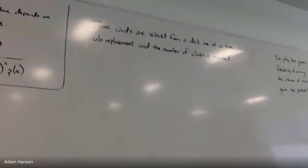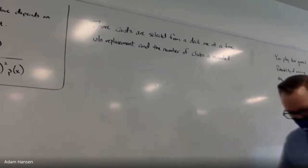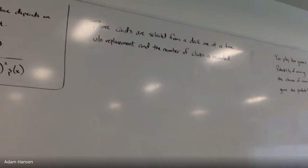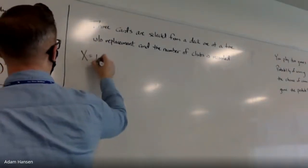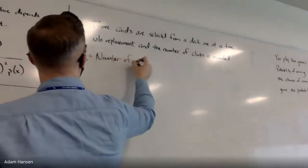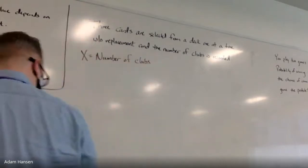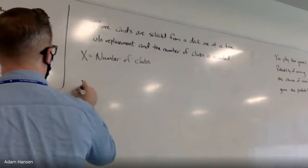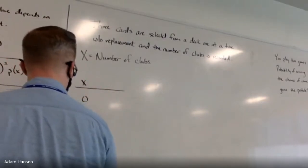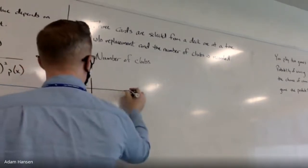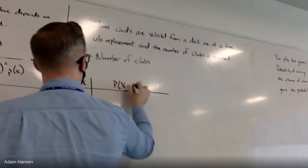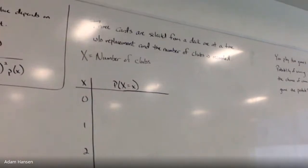The first experiment: three cards are selected from a deck, one at a time without replacement, and the number of clubs is recorded. How many clubs could I potentially have? Zero to three. So if I let capital X be the random variable denoting the number of clubs in my hand, the values that random variable can take on are anywhere between zero and three.